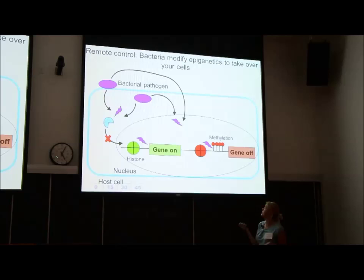Another way some bacterial pathogens do this is by secreting proteins that end up directly in the host nucleus and can act on the DNA directly to alter which genes are on and which genes are off.